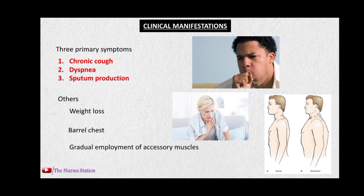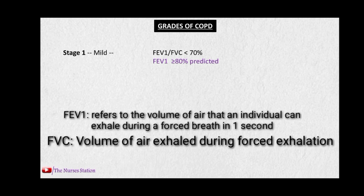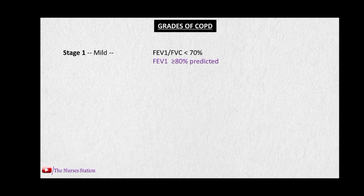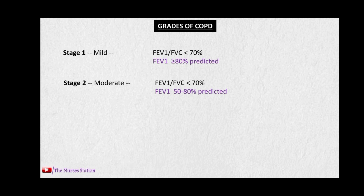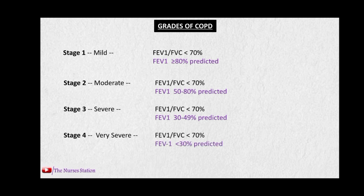There are four grades of COPD. In Stage 1 (mild), the ratio of FEV1 to FVC is less than 70% and FEV1 is equal to or greater than 80%. In Stage 2 (moderate), the ratio remains the same and FEV1 decreases to 50–80%. In Stage 3 (severe), FEV1 decreases further to 30–49%. In Stage 4 (very severe), FEV1 decreases to less than 30%.